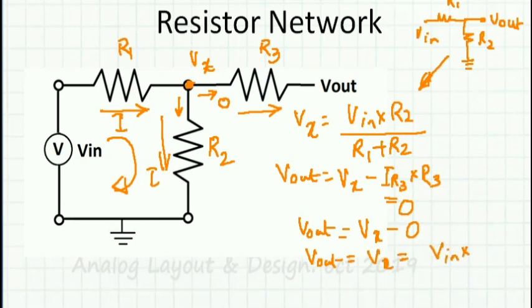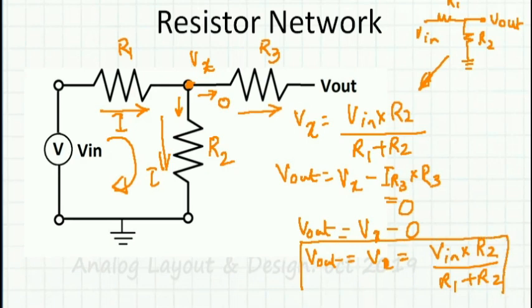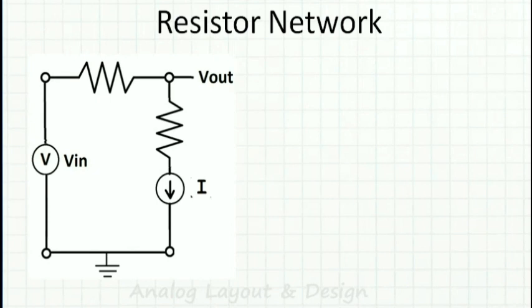So Vout is Vin into R2 divided by (R1 plus R2) itself. Now let's try and solve a different type of resistor network. It is the same thing — I have R1 and R2 — but in addition I have a current source. Think over, pause the video, and try it out for yourself.